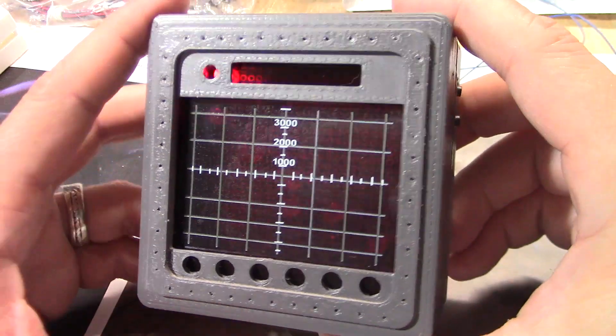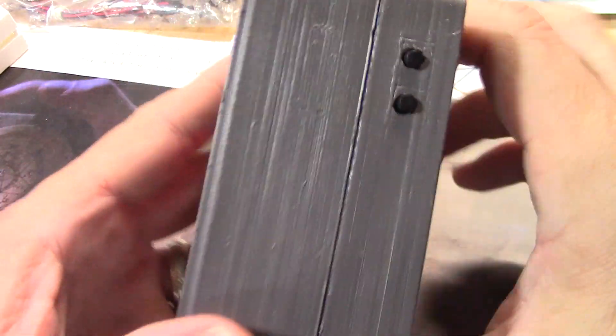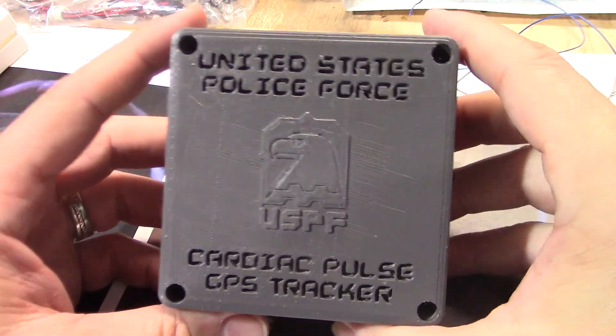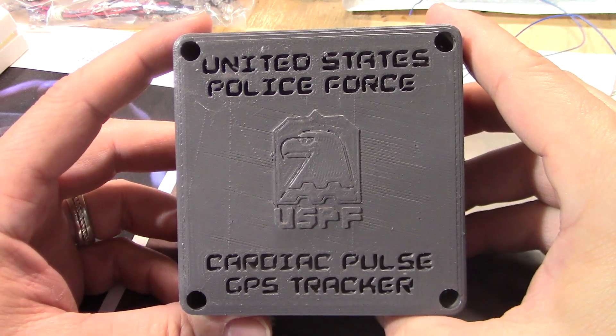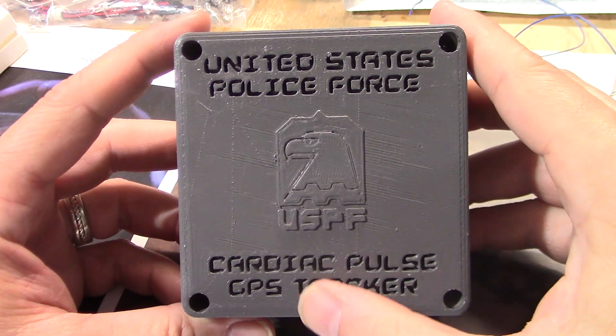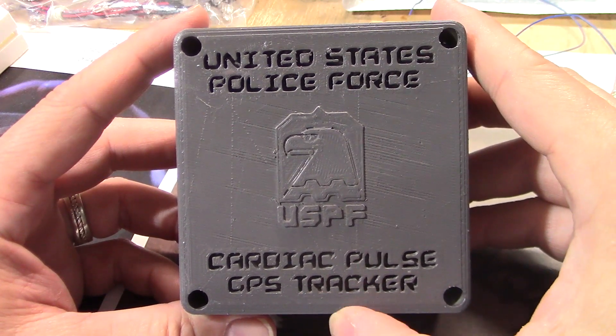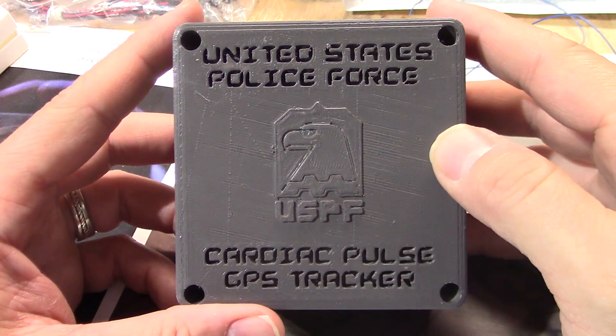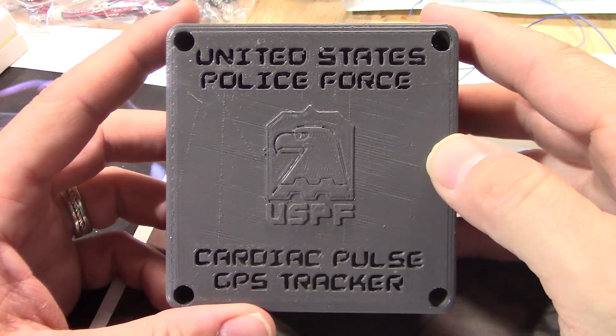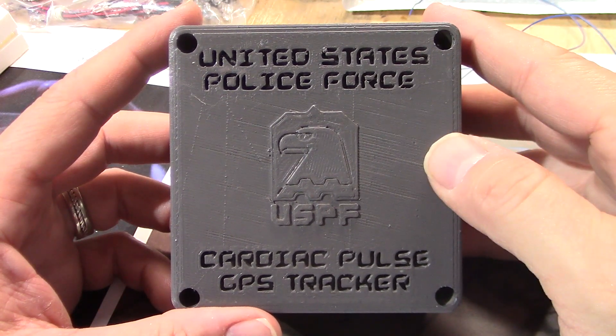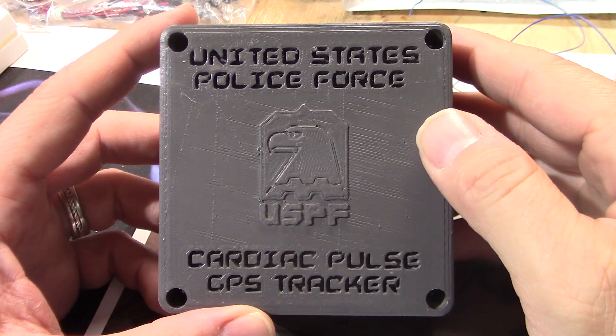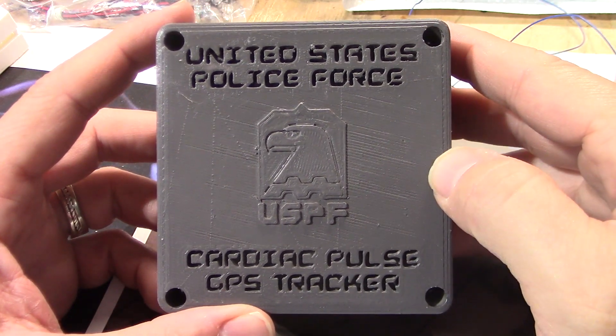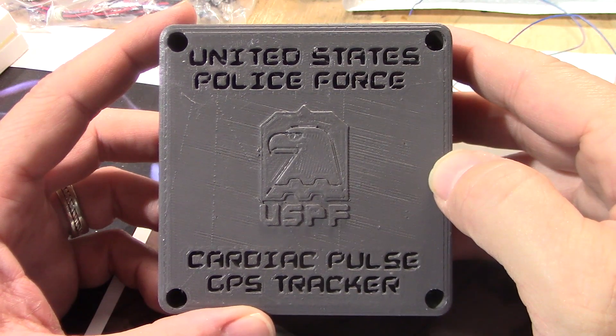I just wanted to give you guys an overview of what I did here. I added my own back to this. You never really see the back in the movie. It says United States Police Force, Cardiac Pulse GPS Tracker. I don't know if that's really what they called this in the movie, but it seemed the closest to what it was actually doing. And of course it's got the USPF symbol on it as well, so I figured it was maybe like a standard piece of equipment that was issued.